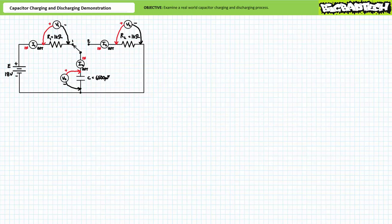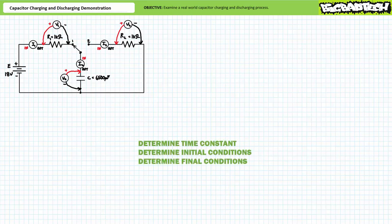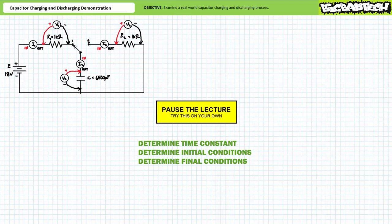First, see if you can calculate the time constant for the capacitor charging process. Then determine the initial conditions for elements in this system. Finally, determine the final steady-state conditions for elements in the system after a full charge of five time constants. By all means, pause the lecture and try this on your own.